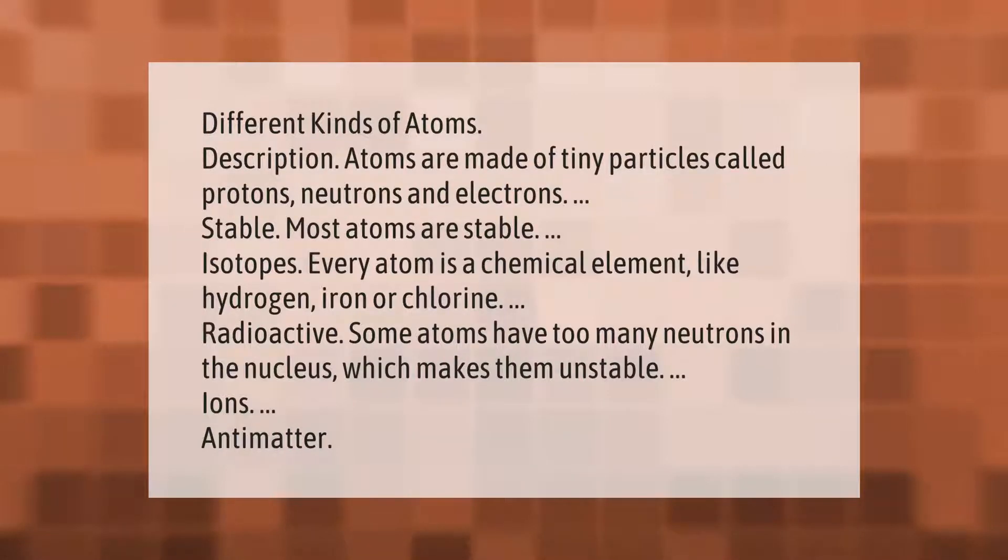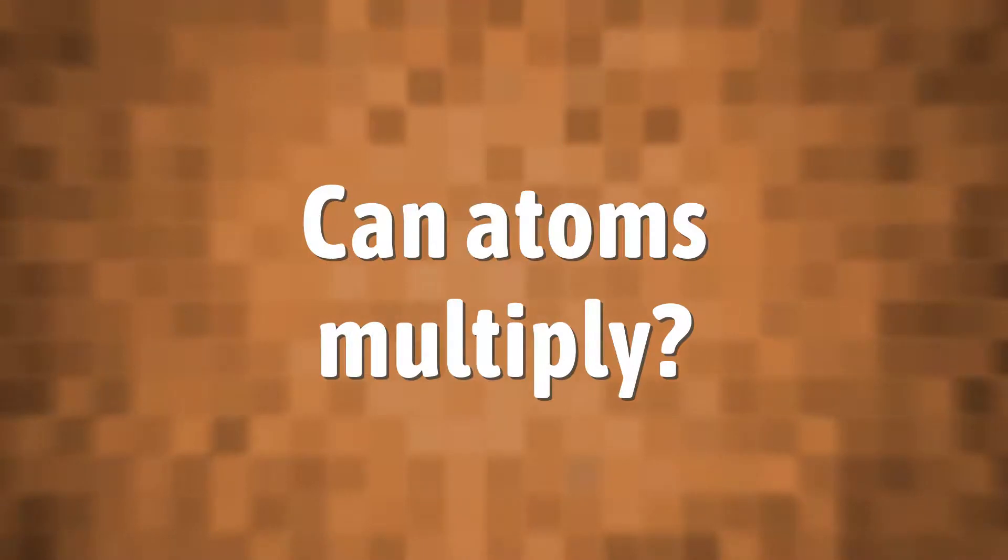Different kinds of atoms: Atoms are made of tiny particles called protons, neutrons, and electrons. Stable: Most atoms are stable. Isotopes: Every atom is a chemical element, like hydrogen, iron, or chlorine. Radioactive: Some atoms have too many neutrons in the nucleus, which makes them unstable. Ions. Antimatter.